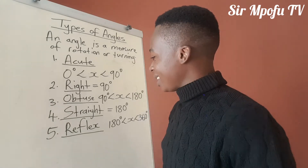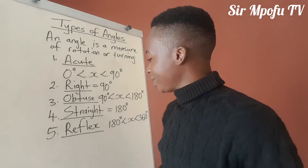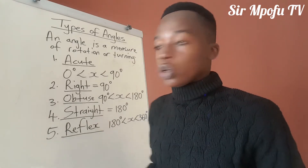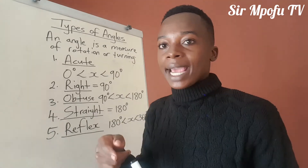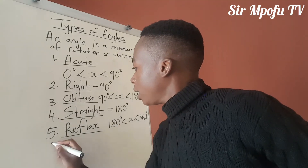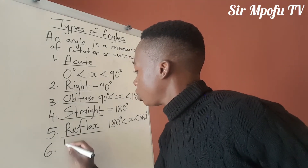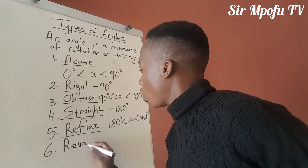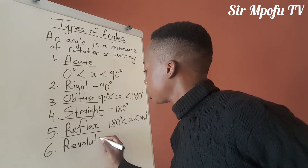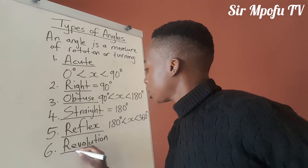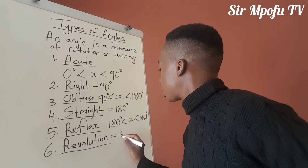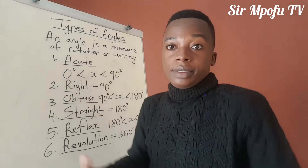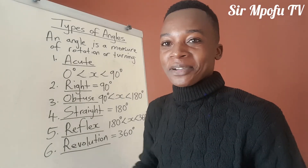The last one is called revolution. 360 degrees is a complete turn — it is called revolution. In other terms, a circle is a complete revolution, or a circle is a revolution.